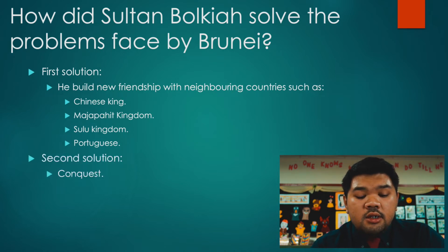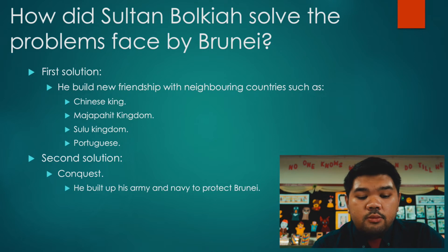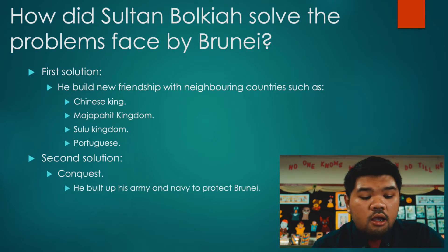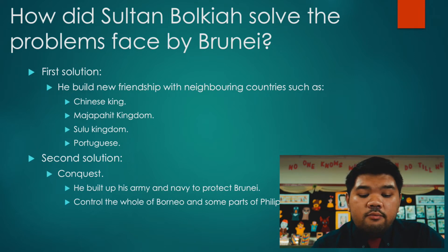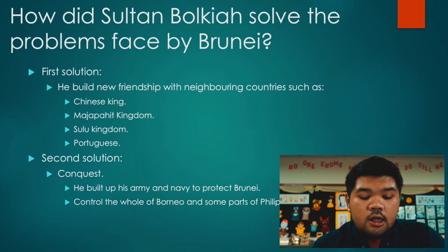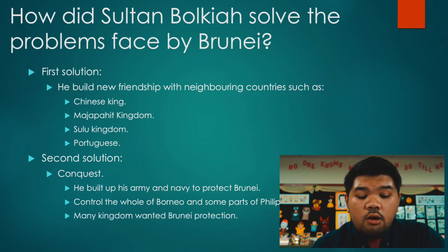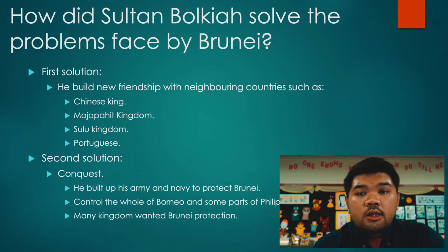The second solution was conquest. He built up his armies and navy to protect Brunei. Since Brunei had a very strong army and navy, Brunei was able to control the whole of Borneo and some parts of the Philippines. Since Brunei was a very strong country, many kingdoms also wanted to be under Brunei's protection.